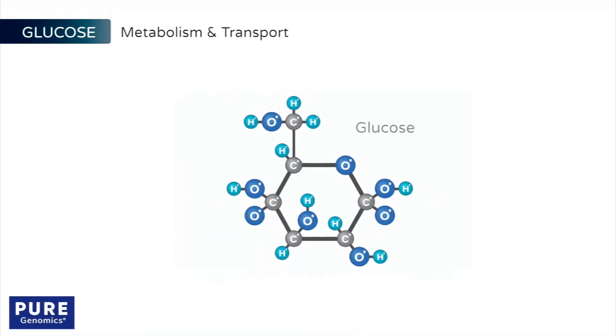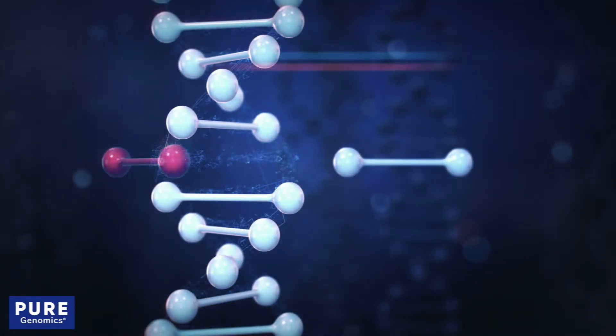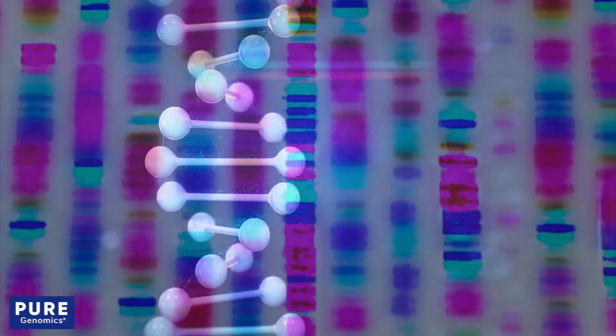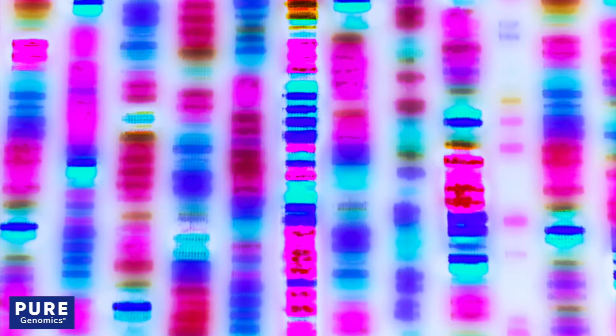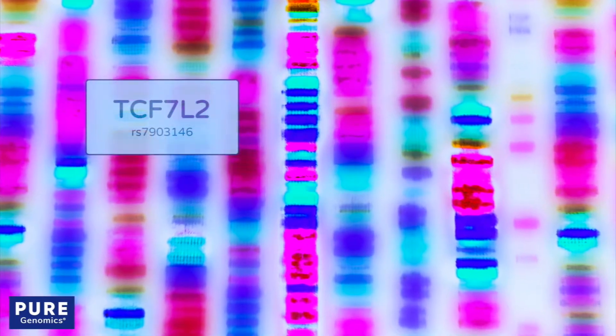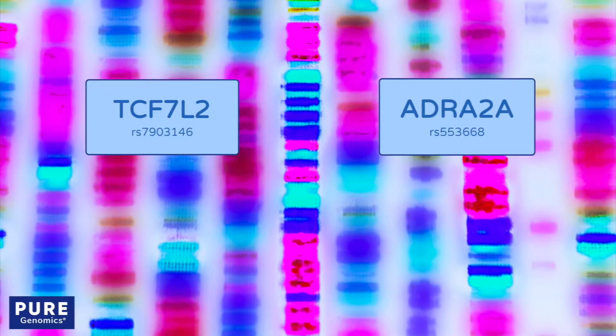Glucose metabolism and transport are regulated by many genetic factors. Two well-studied genetic markers are located in the TCF7L2 and ADRA2A genes.